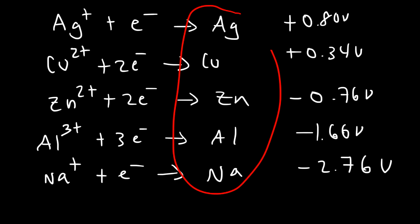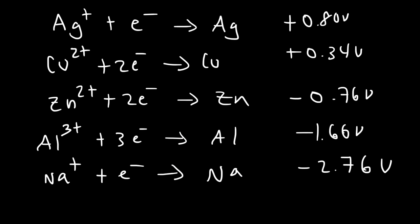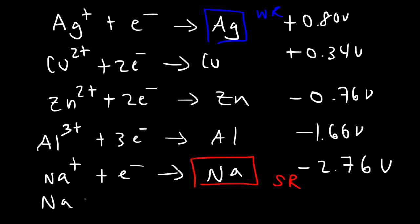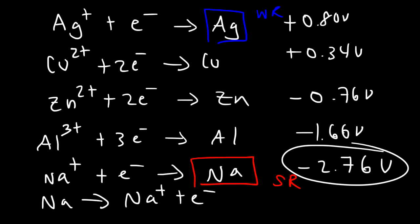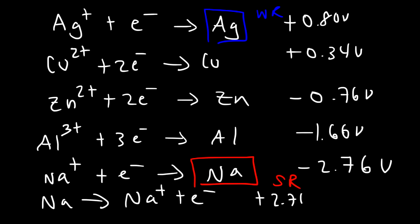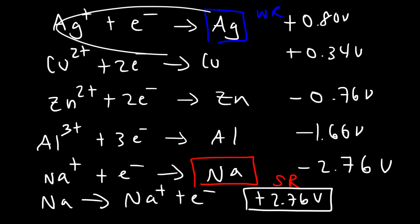Which one is the strongest reducing agent? The reducing agents are the metals on the right side — they have the ability to give away electrons. The strongest reducing agent is sodium, and the weakest is Ag. If we reverse the sodium reaction, the cell potential changes from negative 2.76 to positive 2.76, giving the most positive value when considering electron donation.